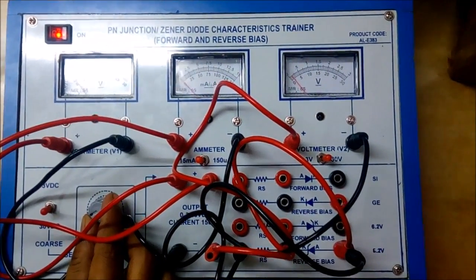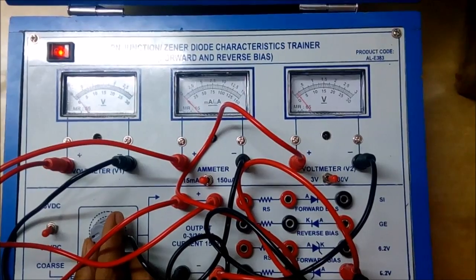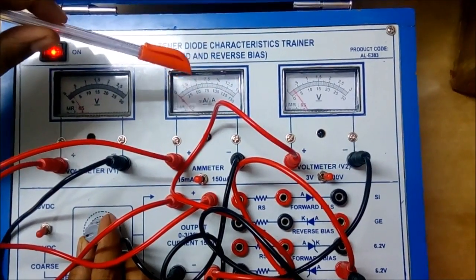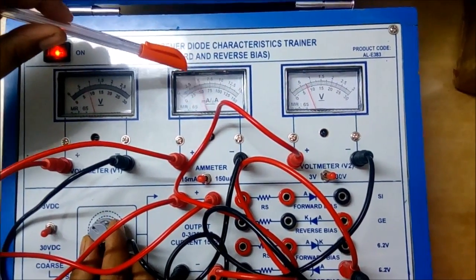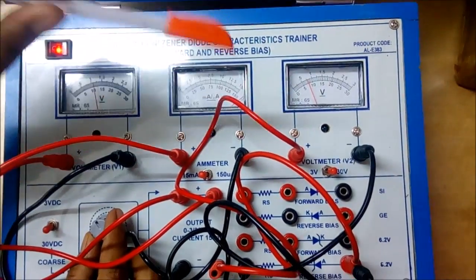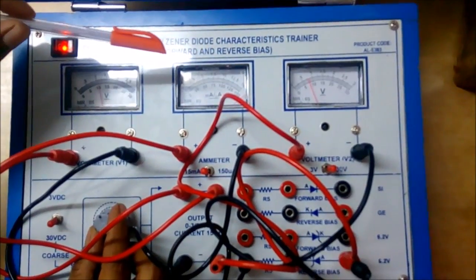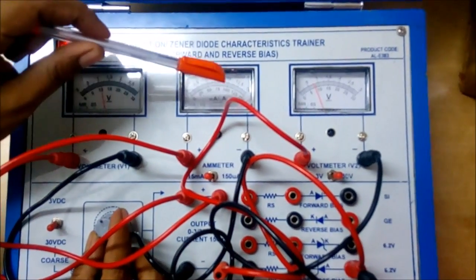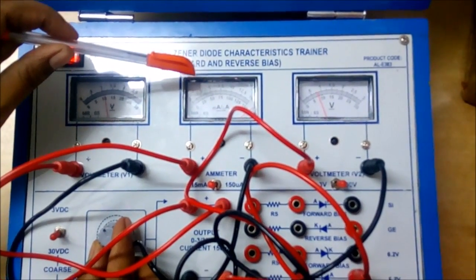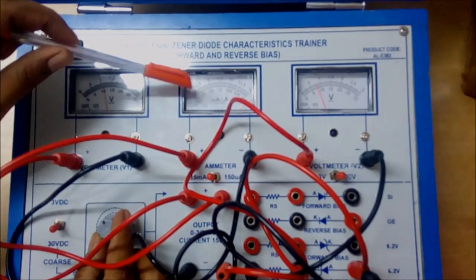We are setting first at 1 volt and we will be taking equivalent readings. Slowly and gradually we would be increasing the voltage, and at a certain point, as per given, 8 voltage would be the cutoff. At that time maximum reverse bias current would be achieved. This is all about your zener diode.